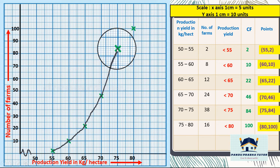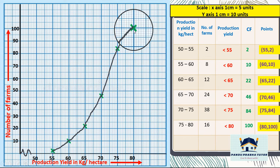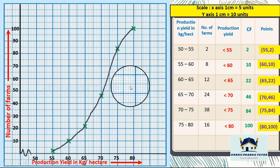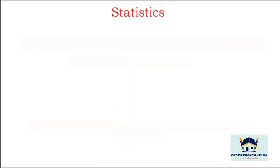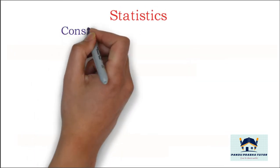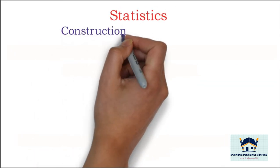Now we have to join all these points in freehand without taking scale, just using pencil. This is required ogive graph for the less than distribution. Now we will discuss same question for more than type distribution.